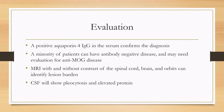An MRI with and without contrast of the spinal cord, brain, and orbits is typically done at initial evaluation. This helps characterize lesion burden — the without-contrast portion can reveal past lesions, and the with-contrast portion, if contrast-enhancing, will identify new lesions.